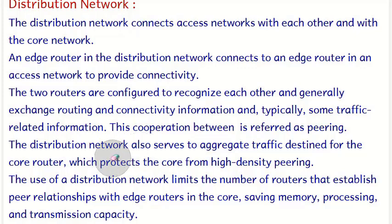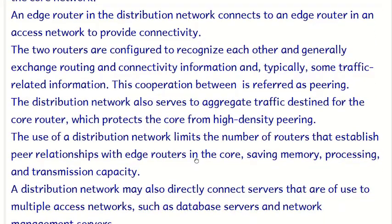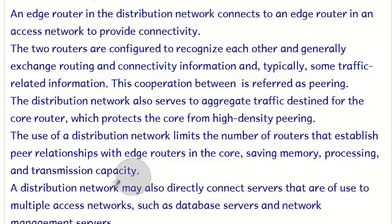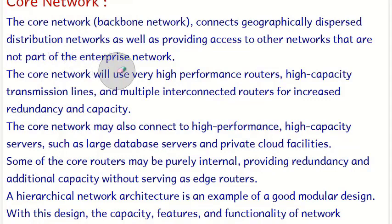The distribution network also serves to aggregate traffic before it reaches the core router. It clears and aggregates traffic coming from the access network so as to protect the core from high-density peering. The use of the distribution network limits the number of routers that establish peer relationships with edge routers in the core, saving memory, processing, and transmission capacity.